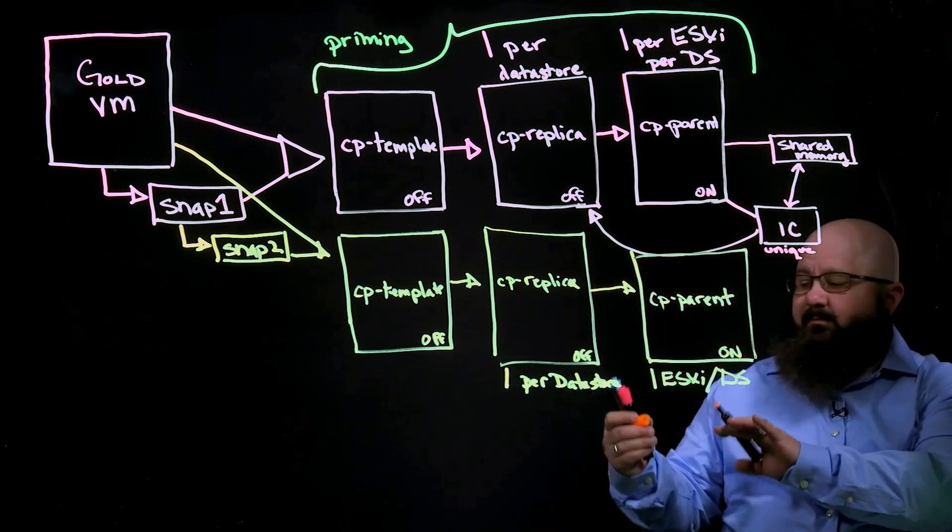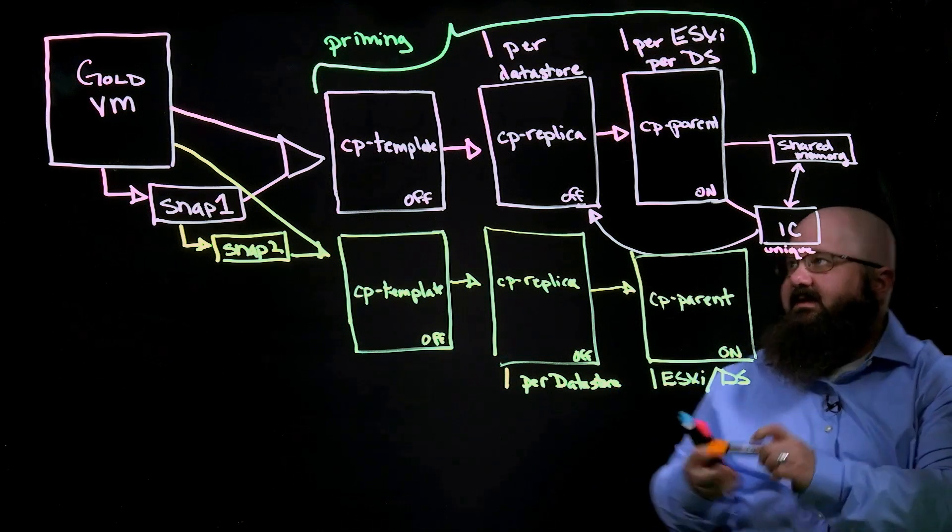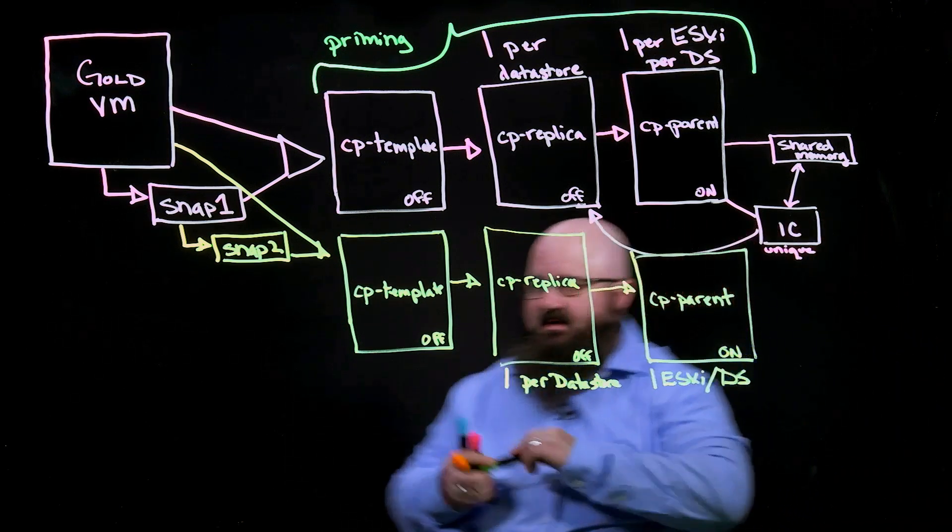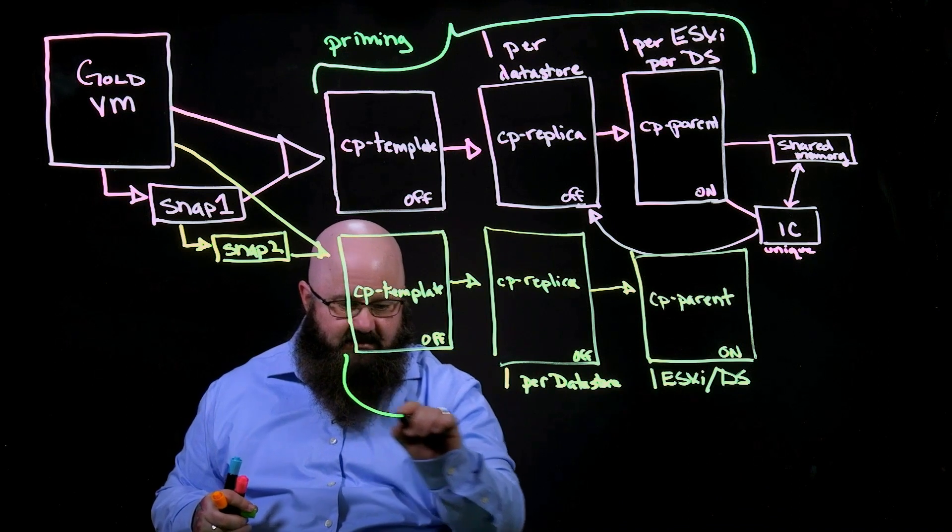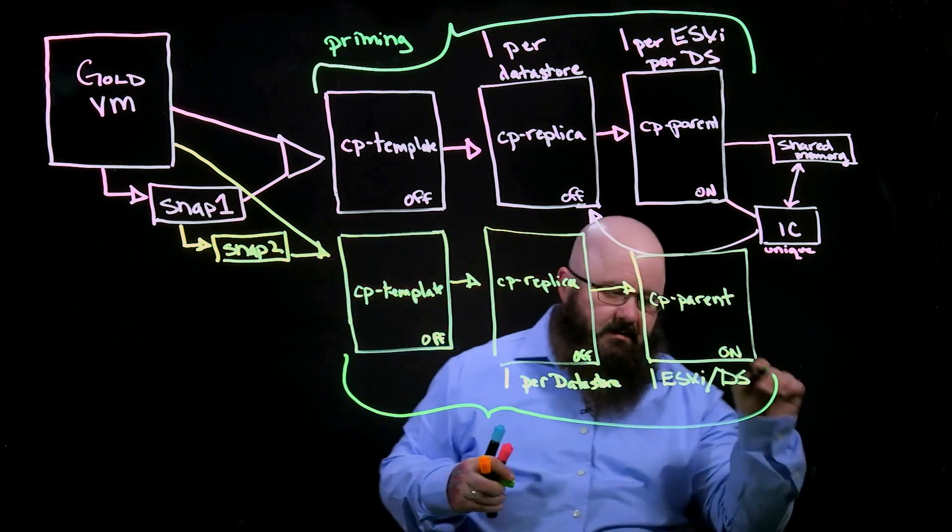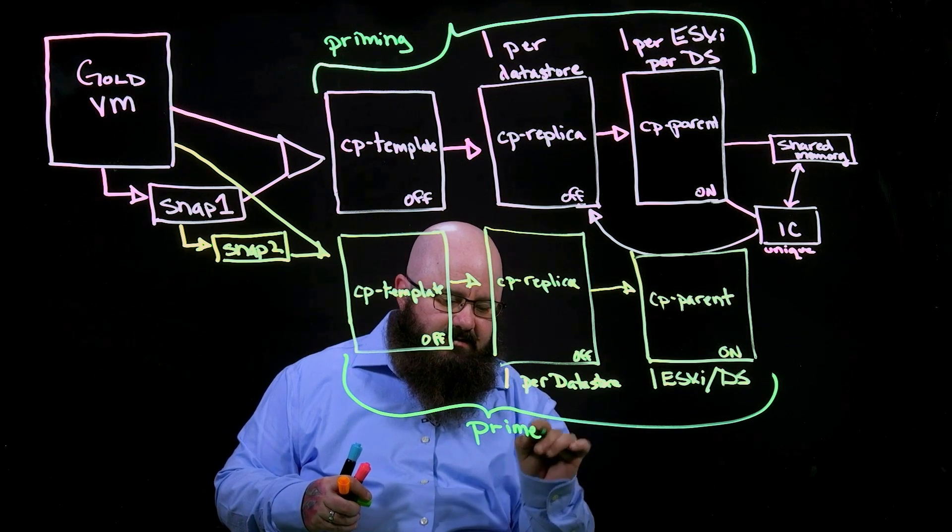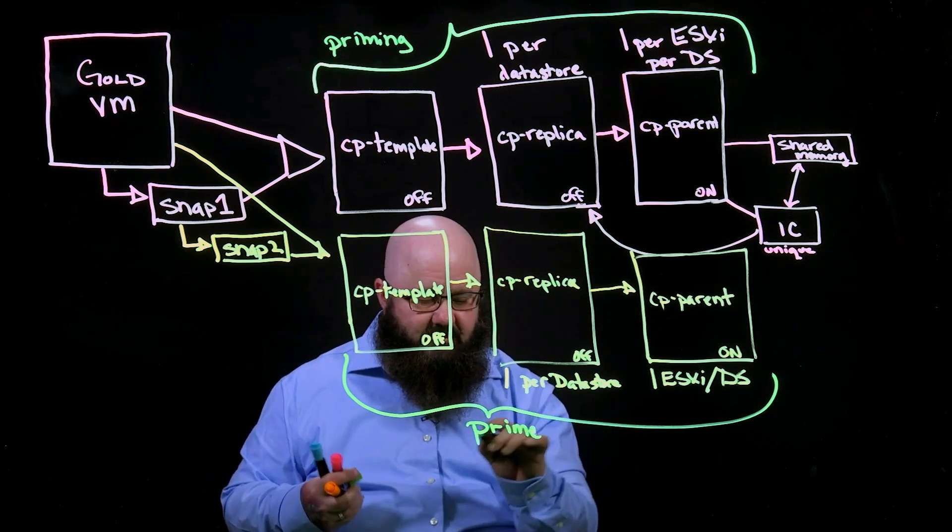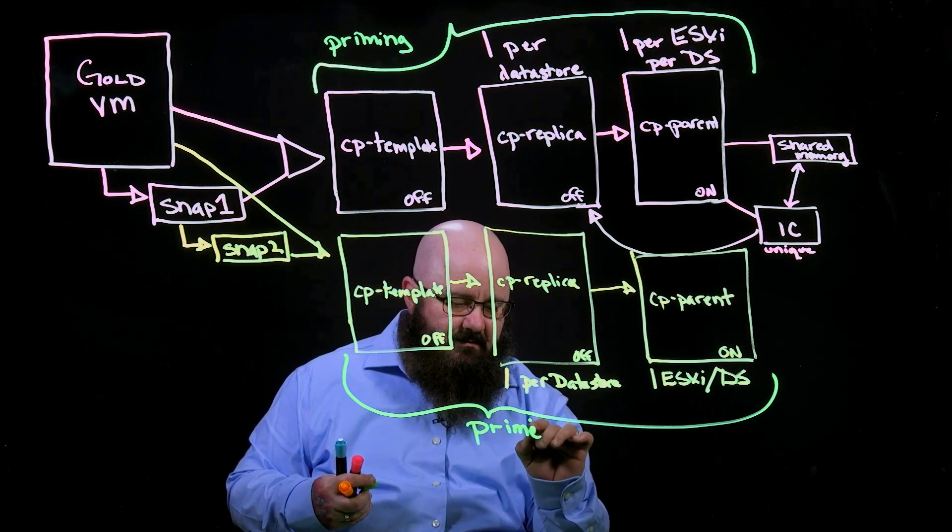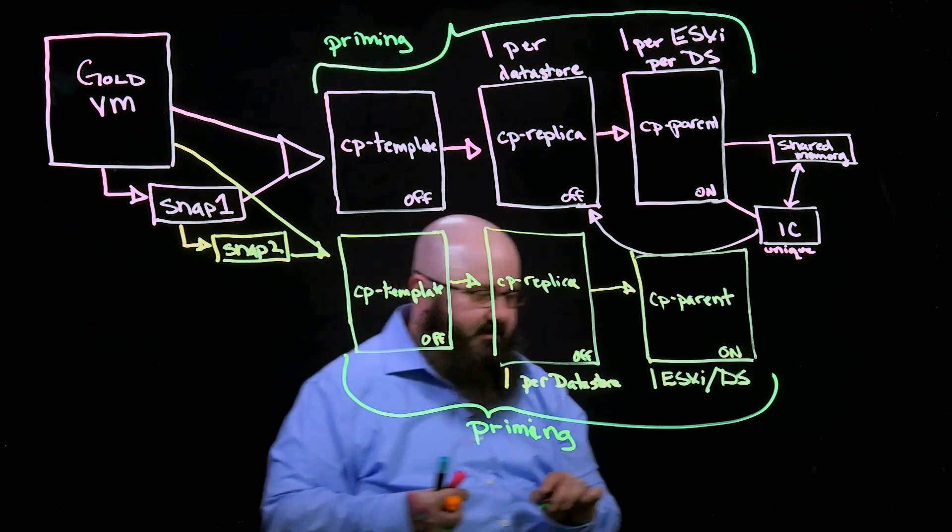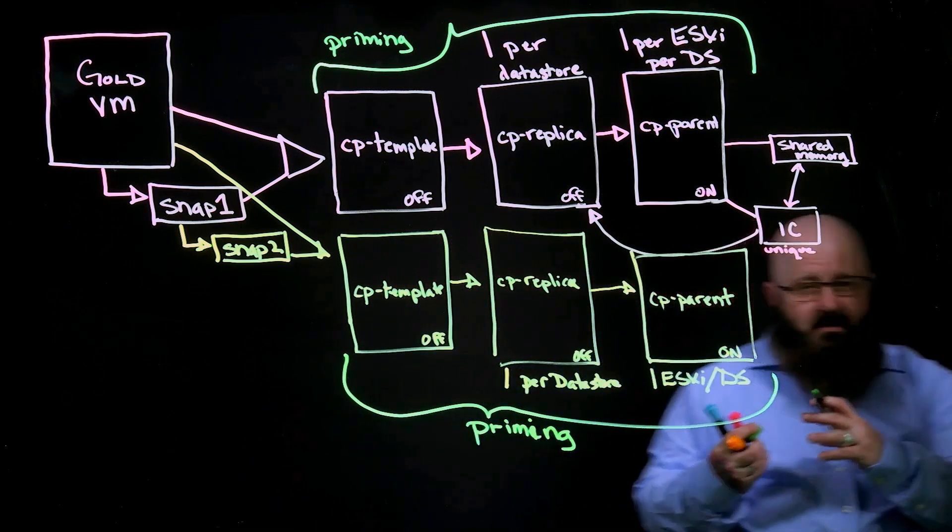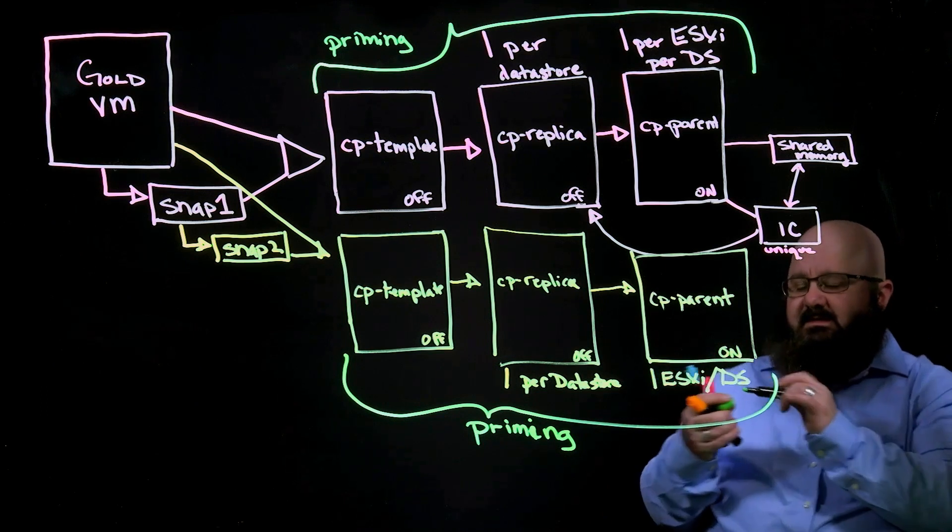Now, at this point, we've primed the environment. Remember, as I said, these three pieces here, the creation of these three pieces is our priming. And this is the part that usually takes the longest. It may take upwards of, say, 20 minutes or so. But this is our priming process that we have within the environment. So that may take 20 or 30 minutes.